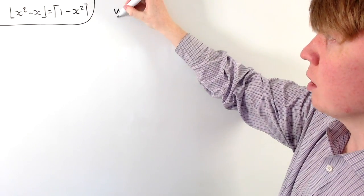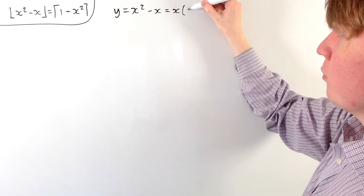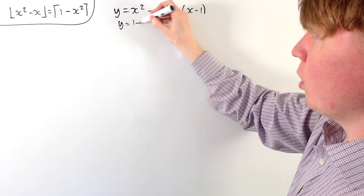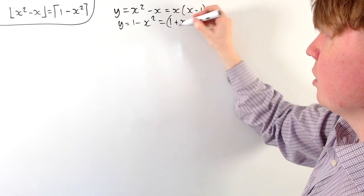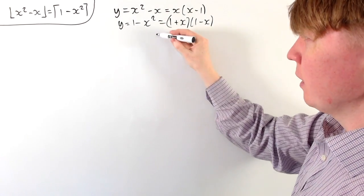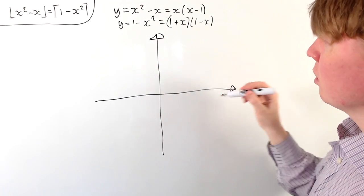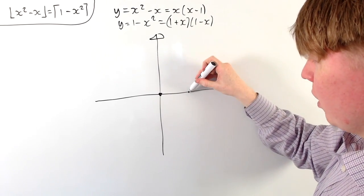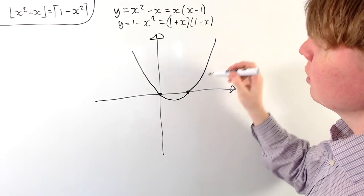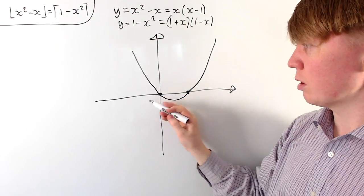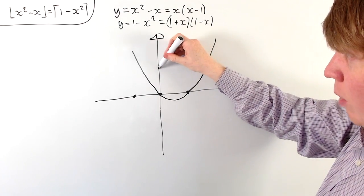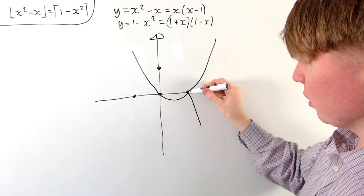Starting with x squared minus x: the graph has roots when x is 0 and x is 1. For y equals 1 minus x squared, this factorises as (1+x)(1-x), giving roots at x equals minus 1 and x equals 1. Drawing these together, x squared minus x is a positive quadratic with roots at 0 and 1, while 1 minus x squared has roots at minus 1 and 1, with a maximum point at x equals 0 where y equals 1.